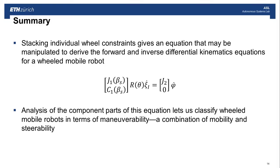So what we saw in this segment was that stacking the individual wheel constraints gives you an equation that may be manipulated to derive the forward and inverse differential kinematics equations for a wheeled mobile robot. And secondly, we analyzed the component parts of this equation, and that let us characterize the types of motions that individual particular platforms are capable of. And to characterize this, we talked about the degree of maneuverability, which was a combination of the degree of mobility and the degree of steerability. Great. Thanks for your attention.